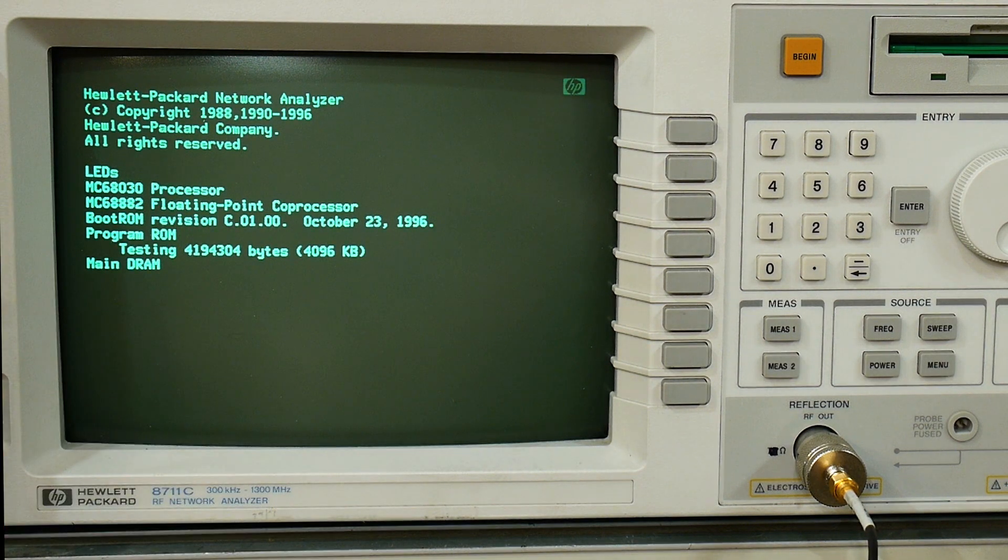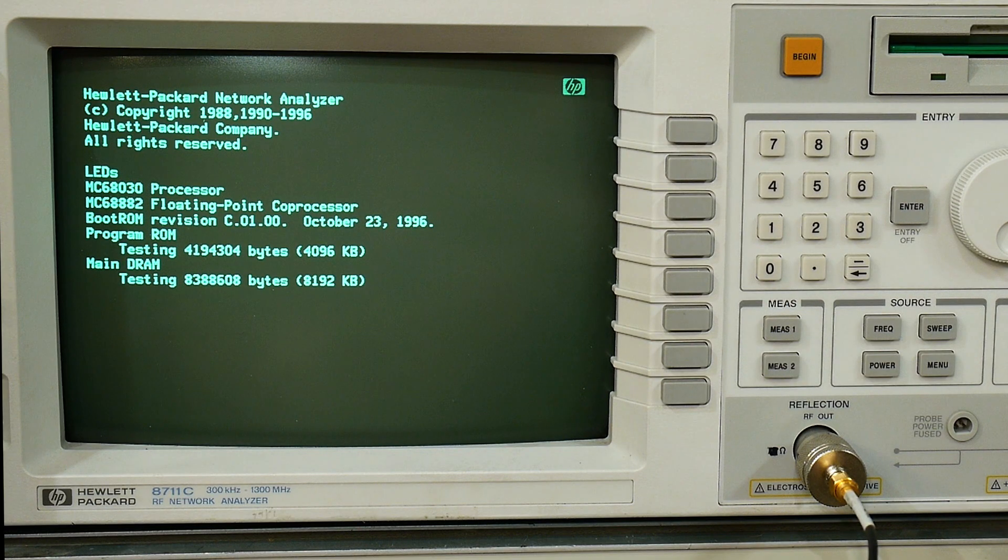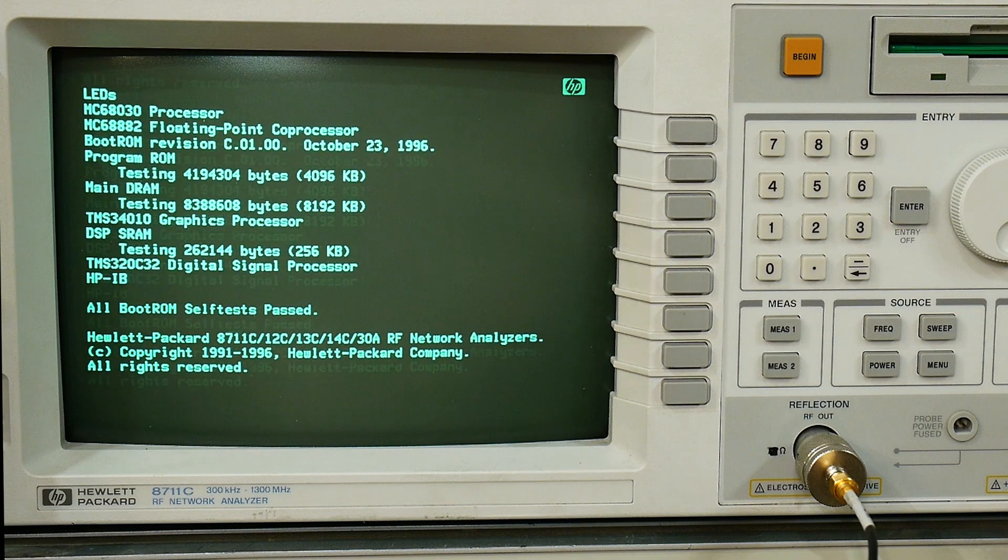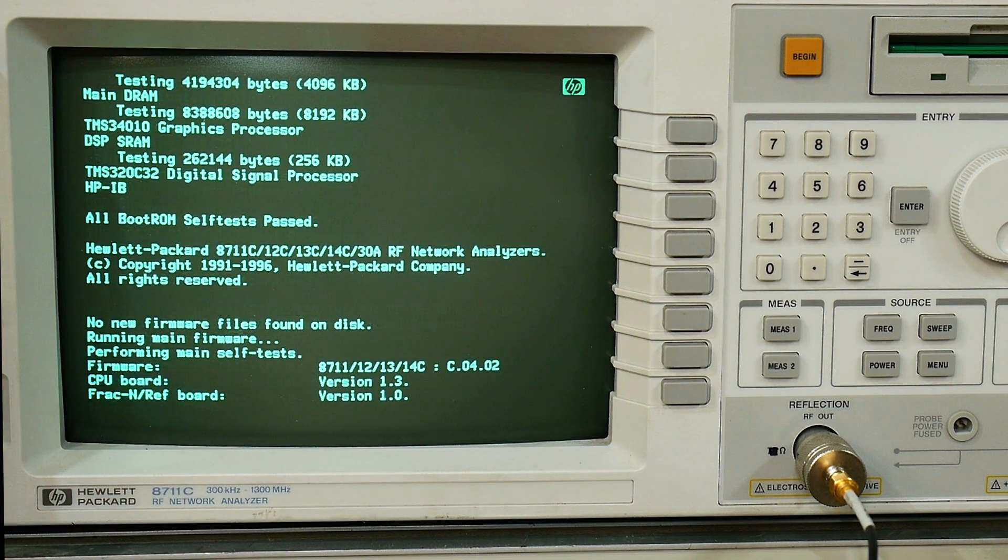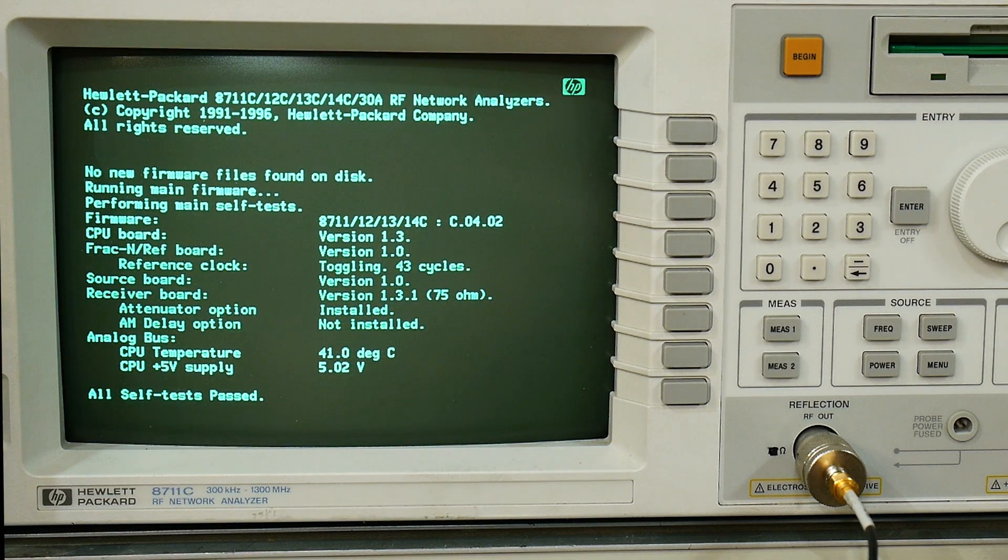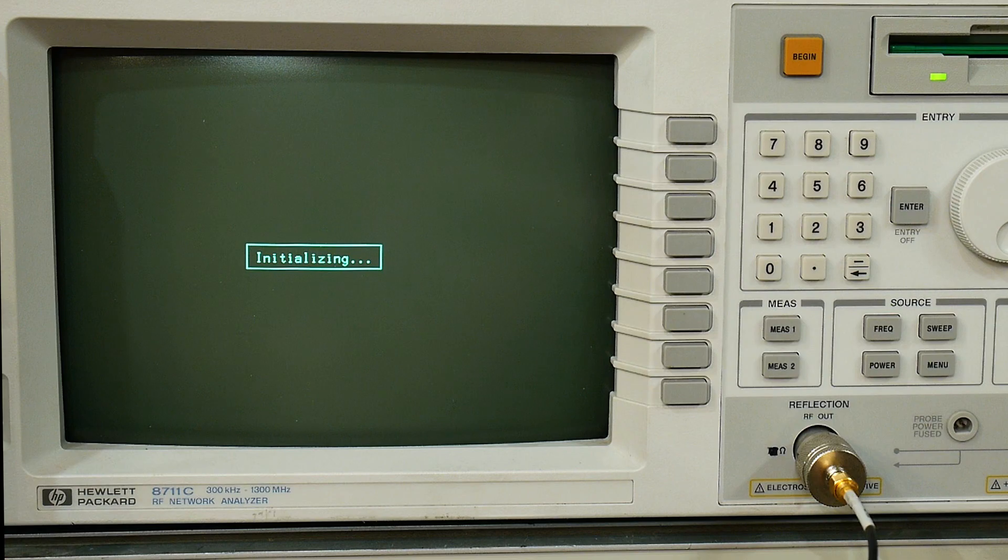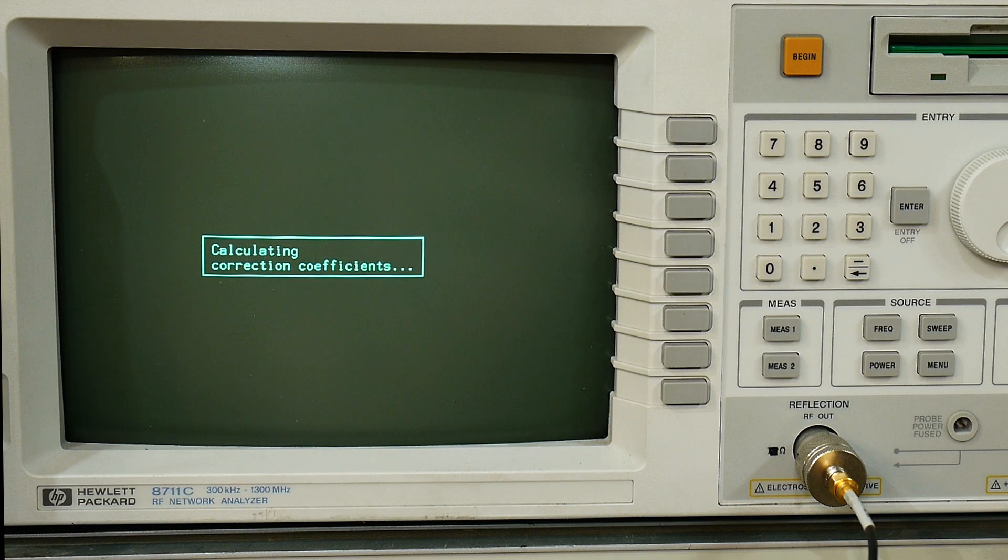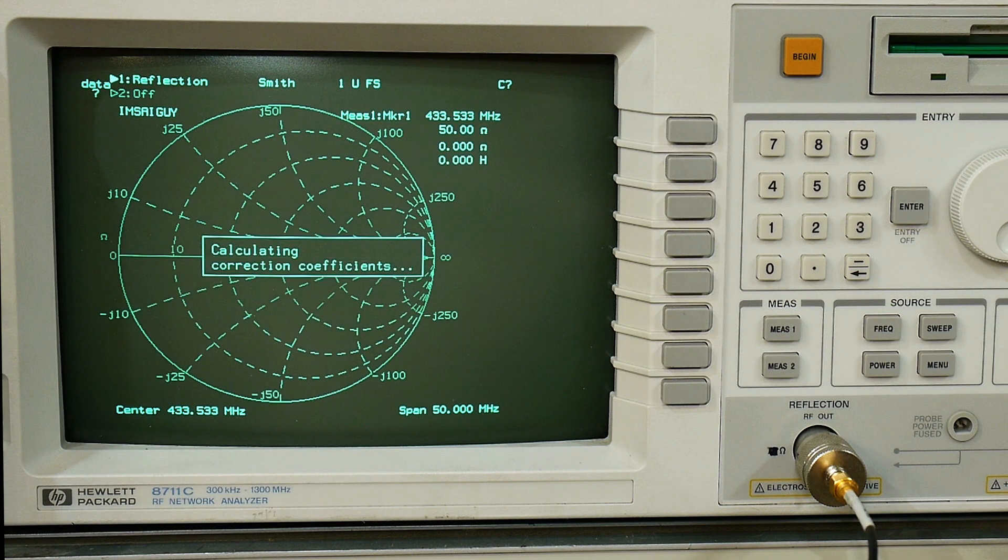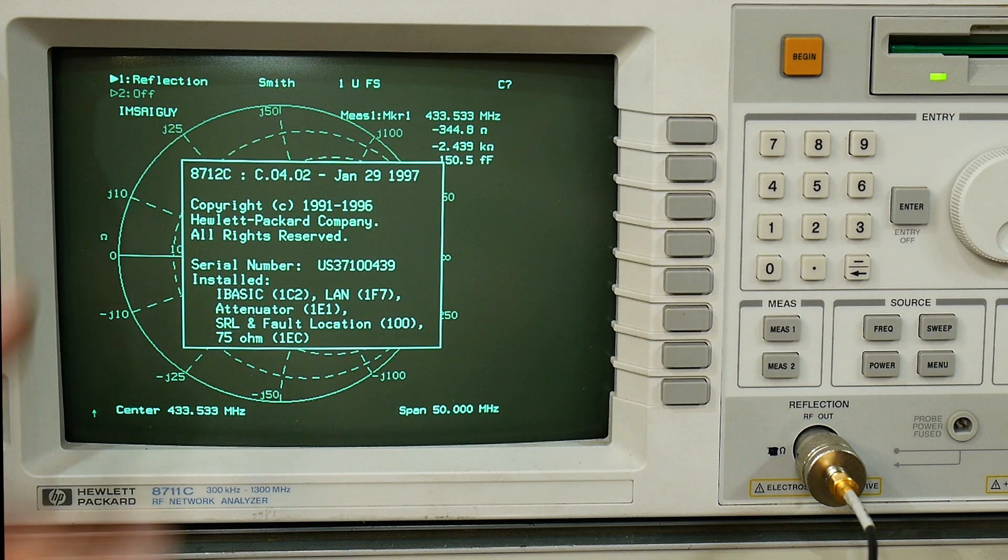It's a 68030 processor with a 6882 coprocessor and it's got some DSP stuff in it. So it passes its boot ROM, it goes and checks the floppy disk for any kind of installs, and looks at stuff.